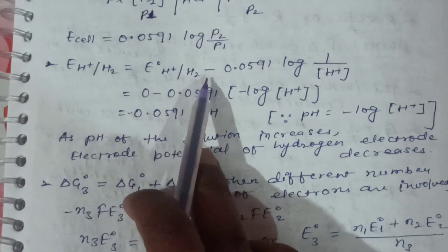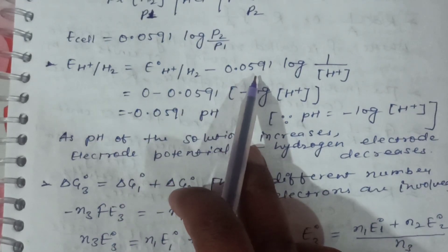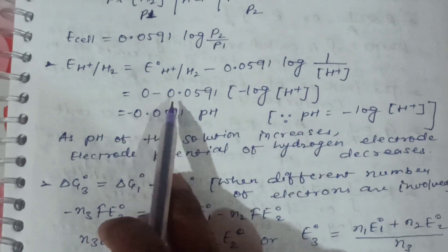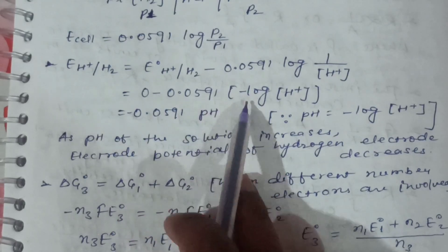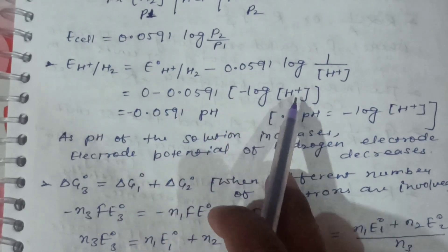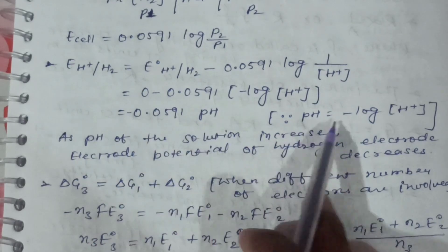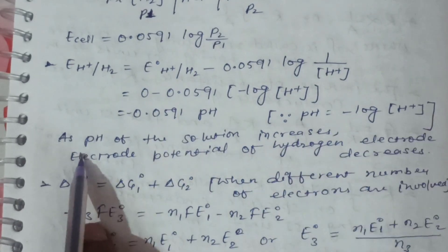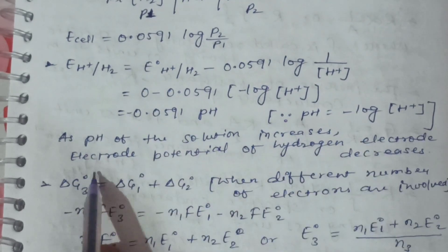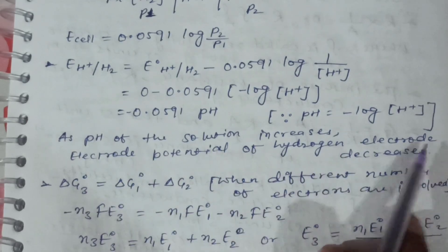E(H⁺/H₂) is equal to E°(H⁺/H₂) minus 0.0591 log 1 upon [H⁺] is equal to 0 minus 0.0591 times minus log [H⁺] is equal to minus 0.0591 pH, where pH is equal to minus log [H⁺]. As pH of the solution increases, the electrode potential of the hydrogen electrode decreases.